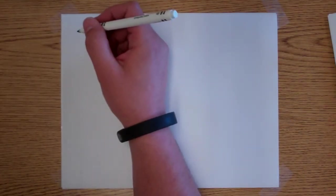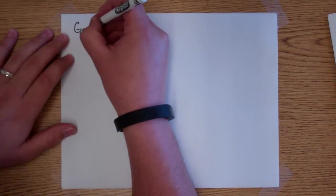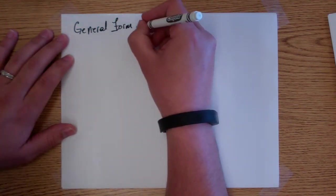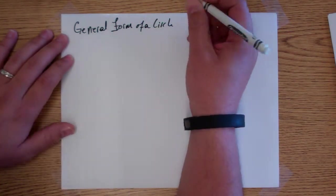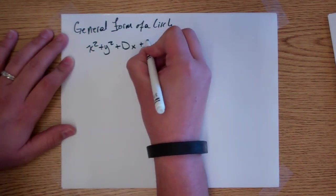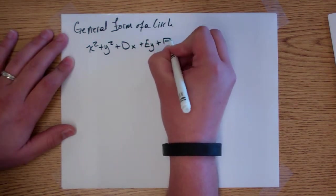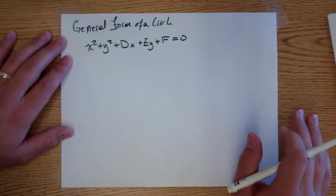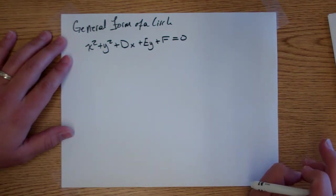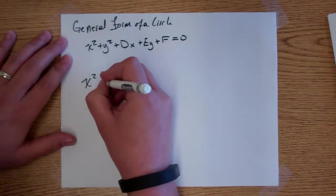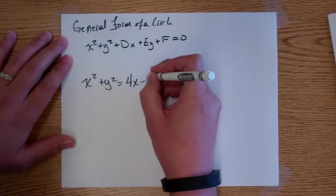The last thing I want to go over is what's called the general form. The other was standard form of a circle; this is called general form. General form of a circle is: x squared plus y squared plus dx plus ey plus f equals 0. It does involve completing the square. Say we had an equation like: x squared plus y squared plus 4x minus 6y minus 23 equals 0, and we want to write this in standard form.